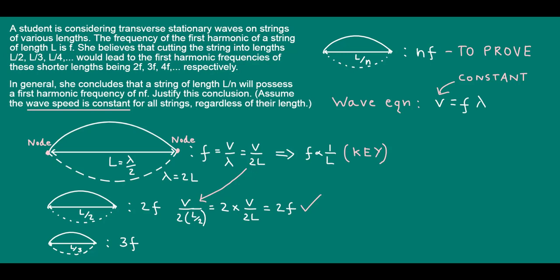To be super explicit, we can see it directly like this as well. Replacing L with L over n yields a frequency of nf, so n times the original first harmonic frequency, which is exactly what we set out to try and prove.